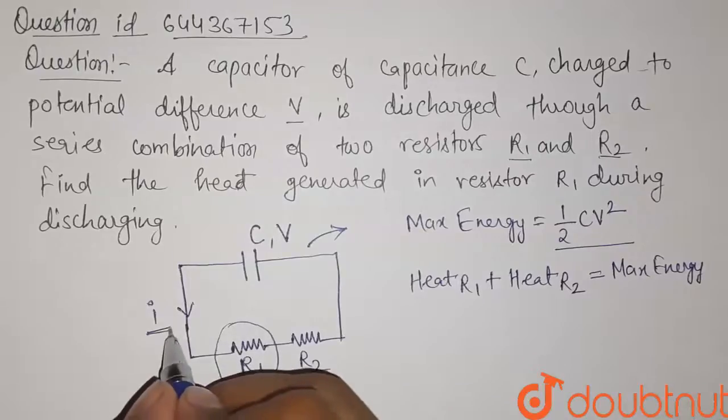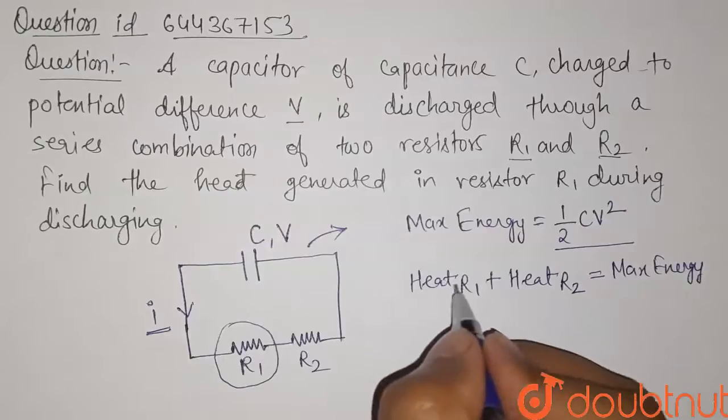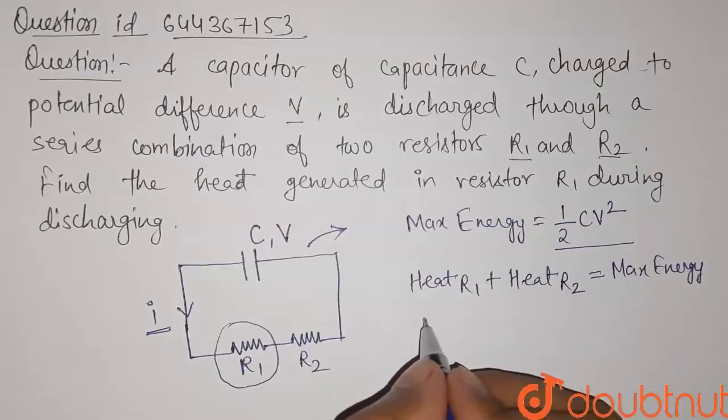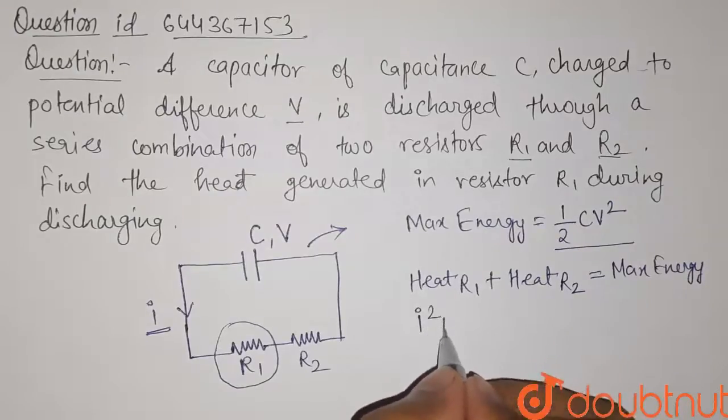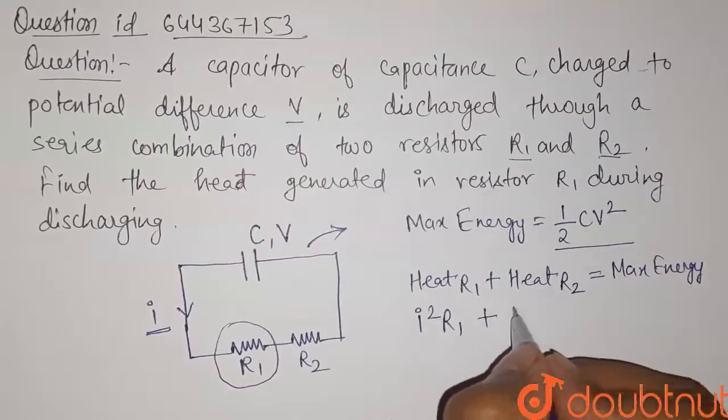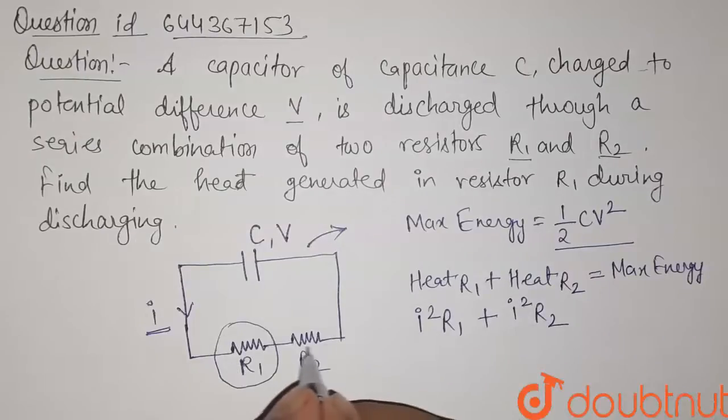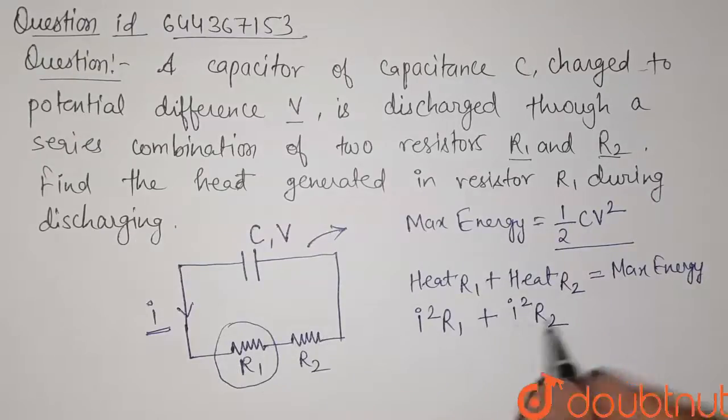We have supposed the current flowing through this circuit is I. So the heat generated in R1 will be I square into R1 plus the heat generated in R2 will be I square into R2 because the same current is flowing through these two resistors.